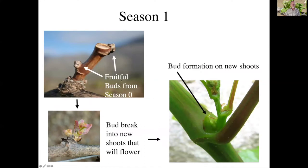In season one, we've just pruned our vines and we have two buds beginning to swell. These are fruitful buds that came from the previous season. Those buds break and start to grow into a shoot. On that shoot we start to form leaves. In the axil of the petiole is a latent bud that is beginning to develop on those new shoots.